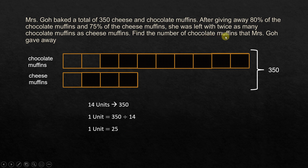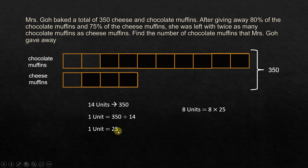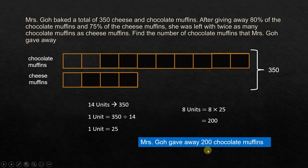1 unit is equal to 25. Now the question asks for the number of chocolate muffins Mrs. Goh gave away. She gave away 80% of the chocolate muffins — in other words, 8 units were given away. So 8 units equals 8 times 25, because 1 unit is 25. That is equal to 200. So Mrs. Goh gave away 200 chocolate muffins. Hope this was easy to understand.